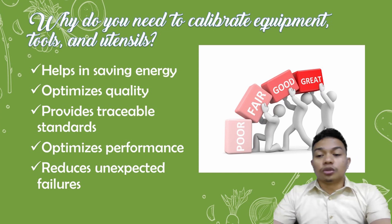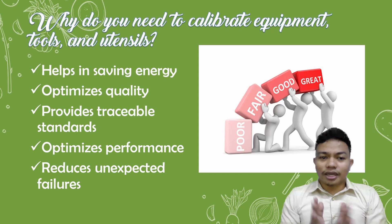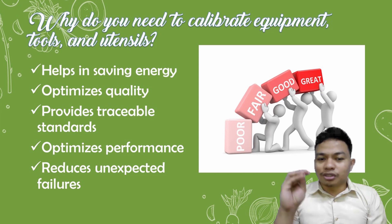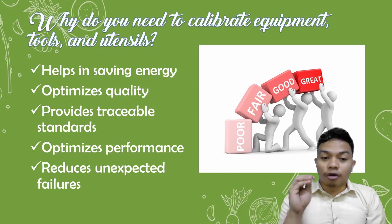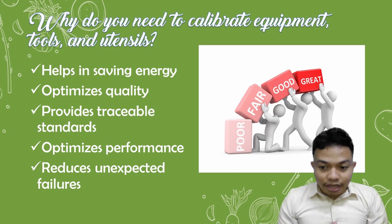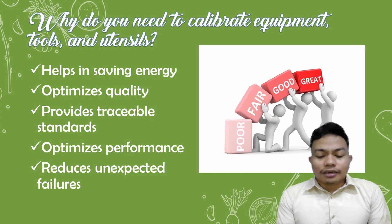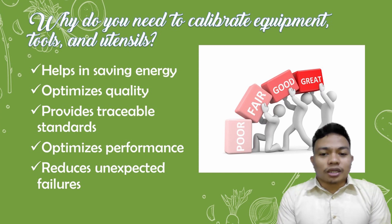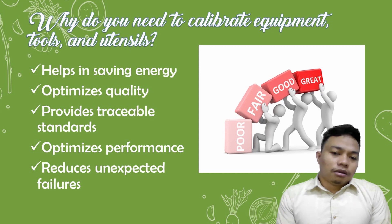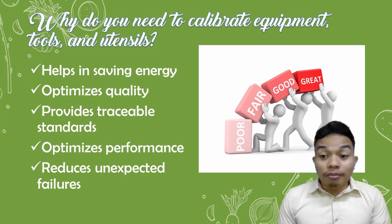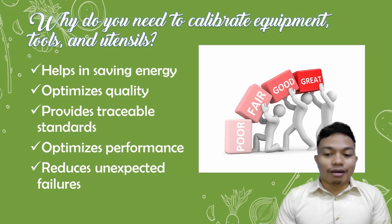Why do we need to calibrate tools, equipment, and utensils? Calibration helps in saving energy, optimizes quality, provides traceable standards, optimizes performance, and reduces unexpected failures. All of these are important — that is why we calibrate our equipment, tools, and utensils. The goal is for our equipment, tools, and utensils to perform not just fairly or well, but at a great level.